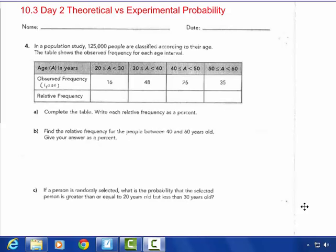If you add that all up, that gives you the 125,000. Letter A says complete the table, write each relative frequency as a percent. So 16,000 out of 125, I could simplify that fraction as 16 because they both have thousands. So 16 out of 125, I could change it to a percent. The decimal would be 0.128, which gives me 12.8 percent.